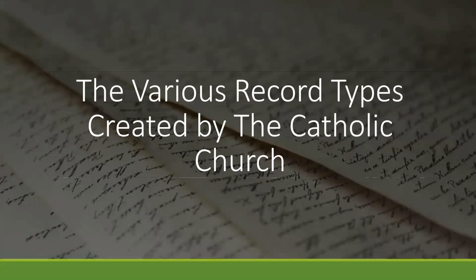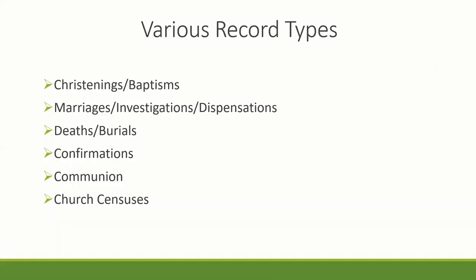Now, the various record types created by the Catholic Church. These are the basic ones: christenings, baptisms, marriage investigations, dispensations, deaths and burials, confirmations, communion, and church censuses. We're just going to focus on some of those.